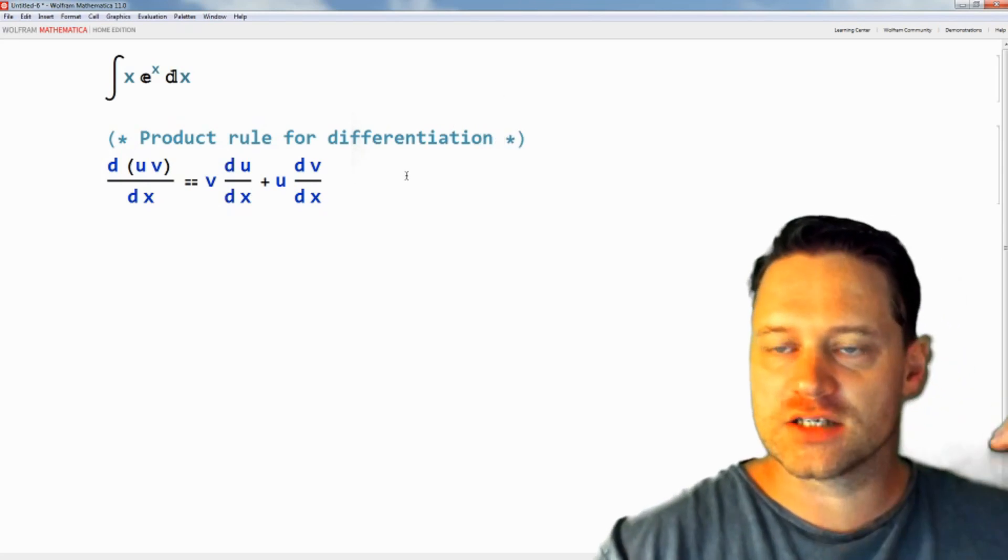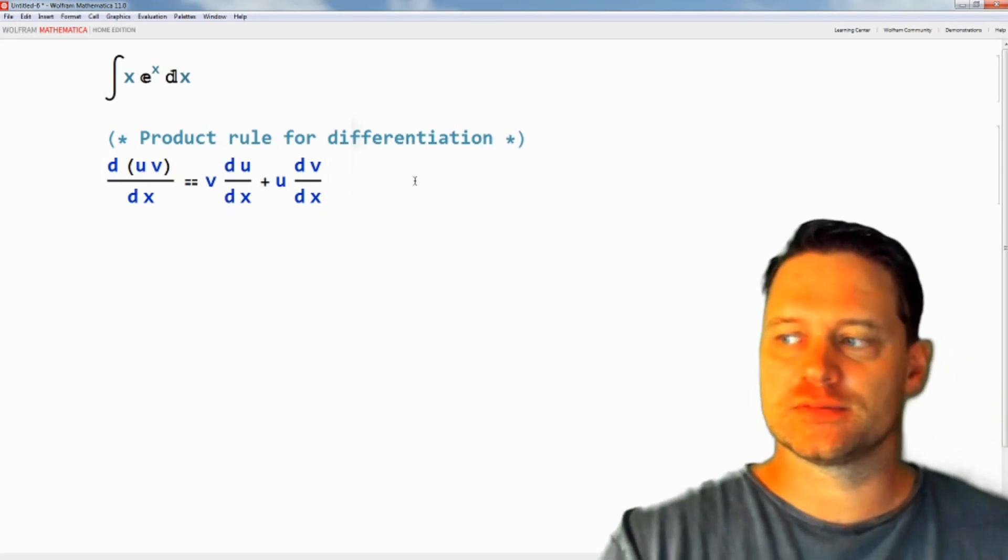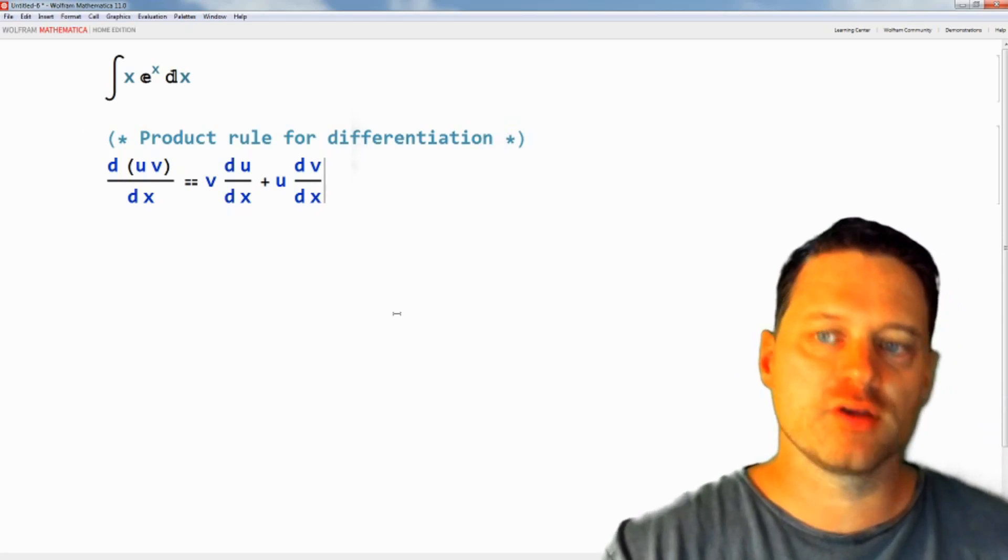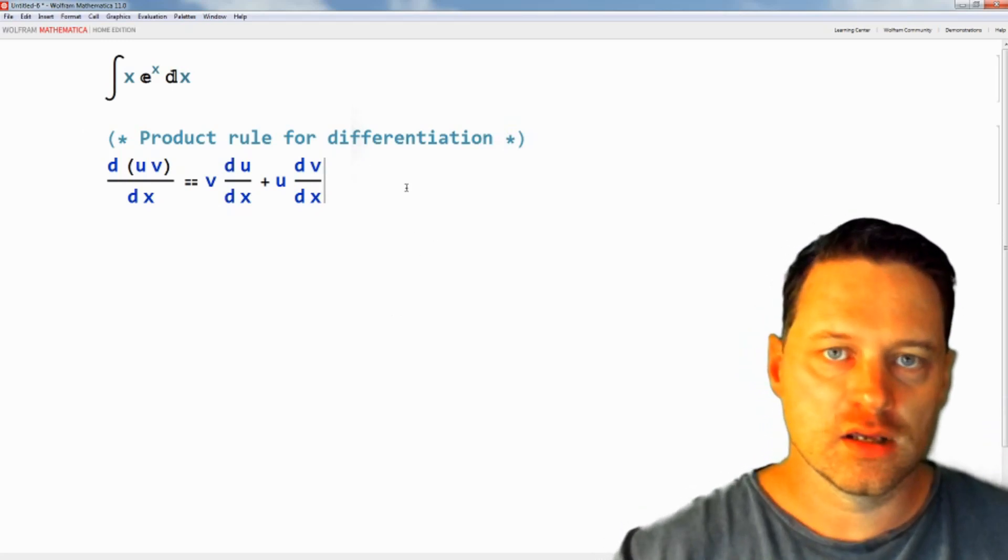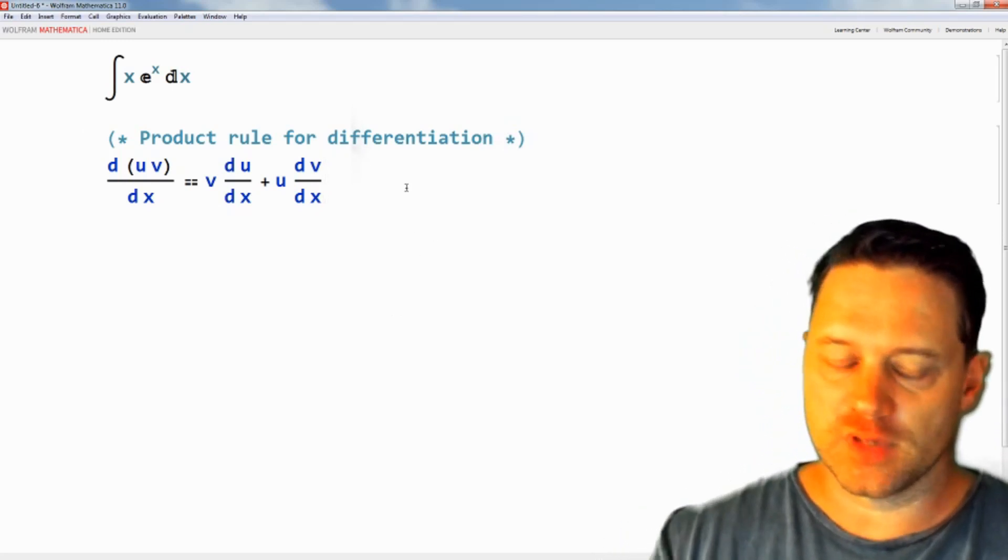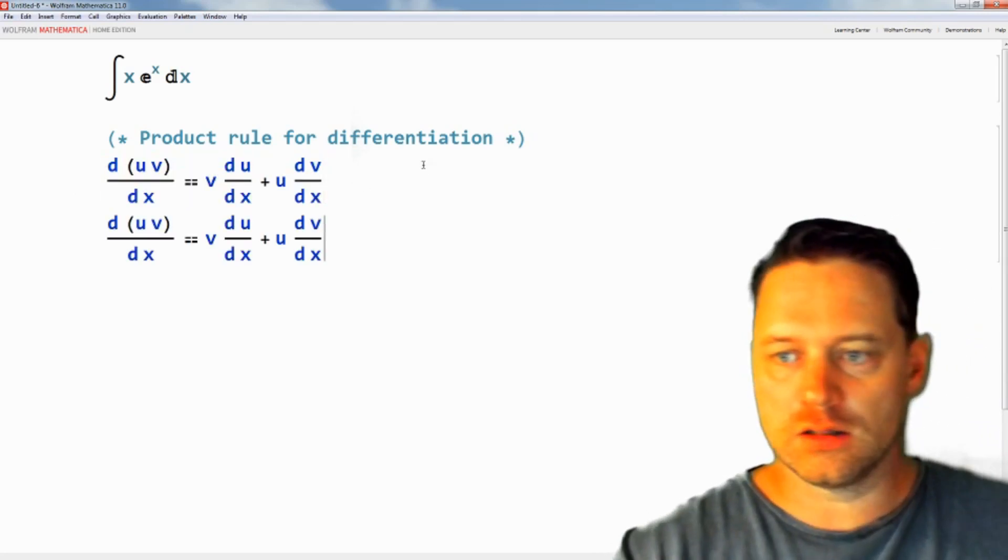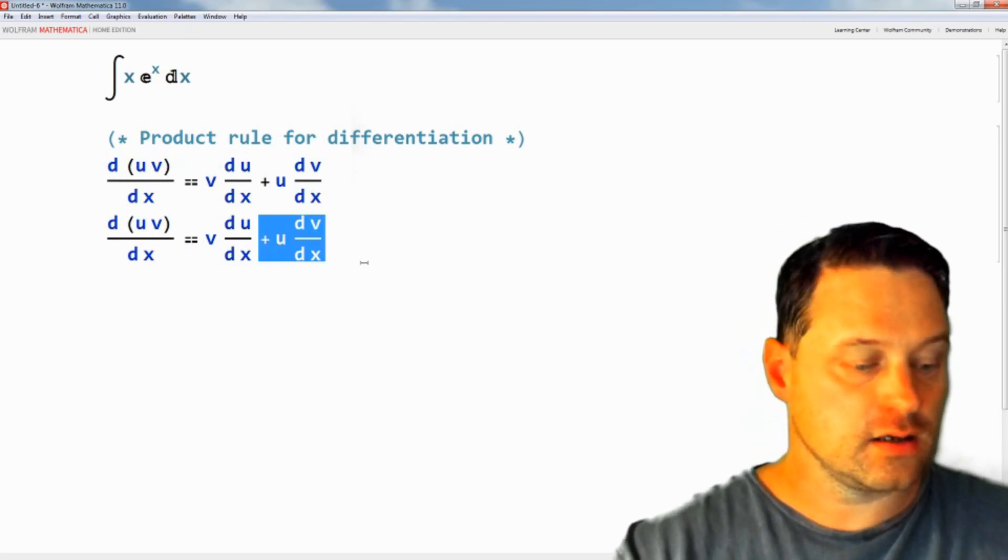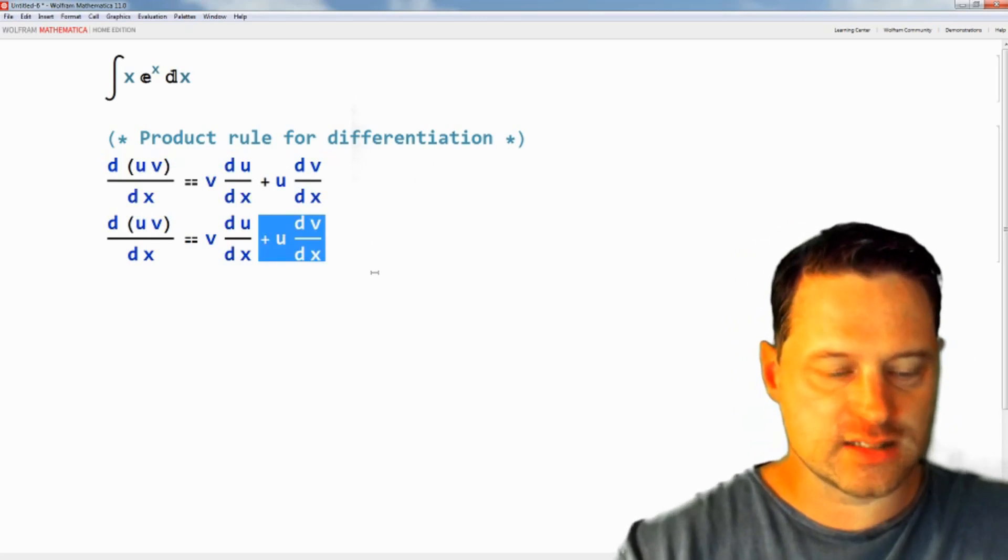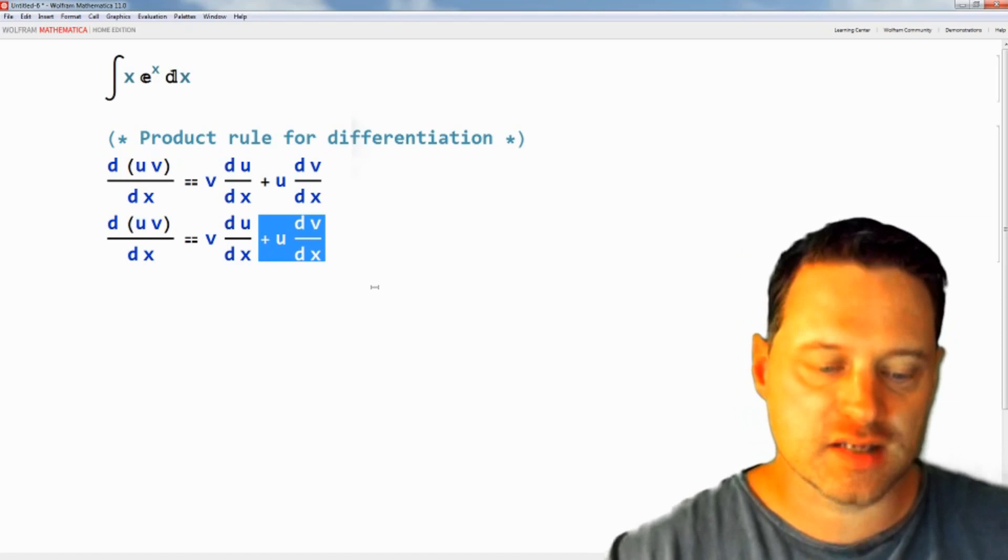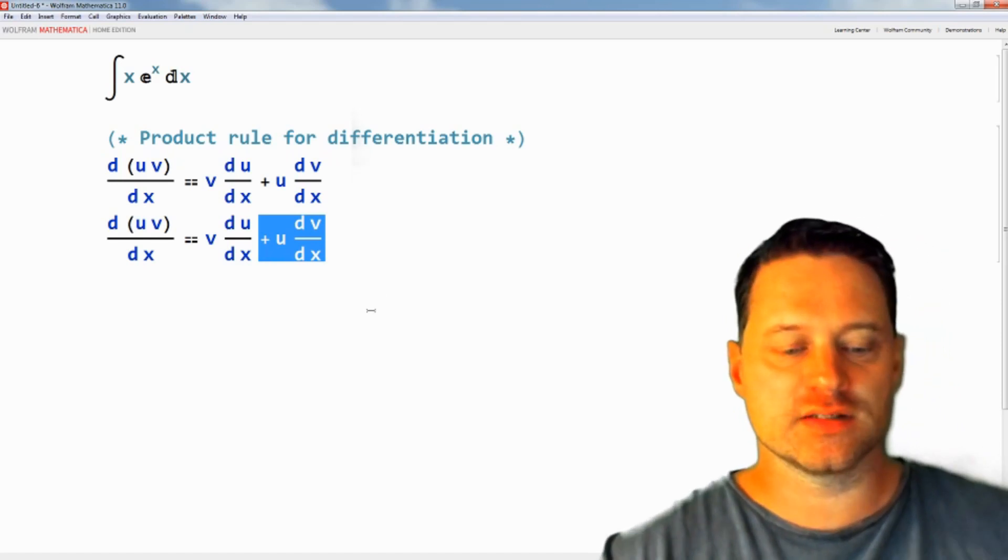Now I just want to do a little bit of algebra on this to show you how you get the formula for integration by parts. I'll copy this and then subtract u times dv/dx from both sides of the equation.